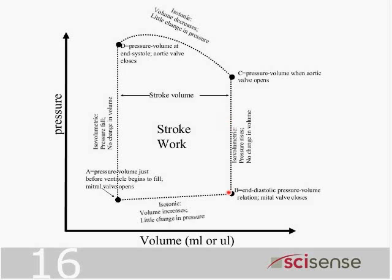The pressure-volume loop gives you an estimate of the static compliance or lucitropic property of the ventricle, and it gives you stroke volume. If you multiply stroke volume by heart rate, it gives you cardiac output — very important parameters which, if affected by drugs or disease, translate to morbidity and mortality.